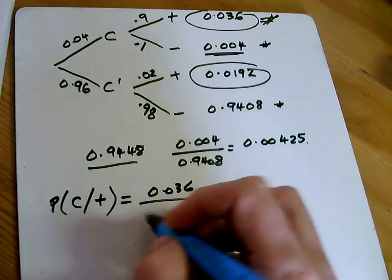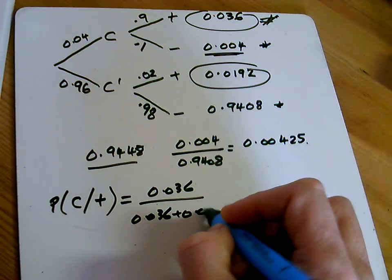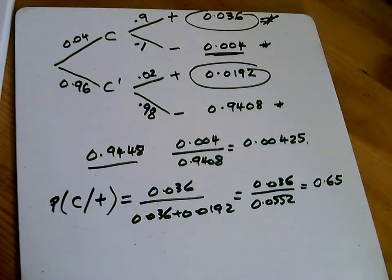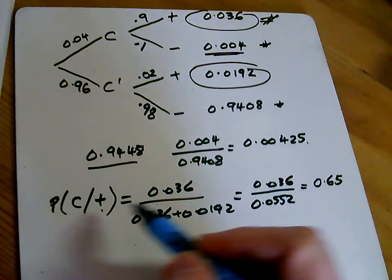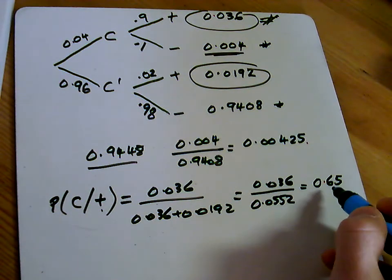So let's work out what this gives. I'll tap that into the calculator. So if you test positive for it, only 65% of people would actually have the condition. So about 35% would be false positives.